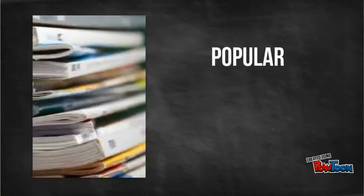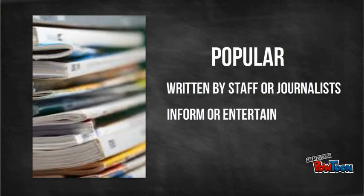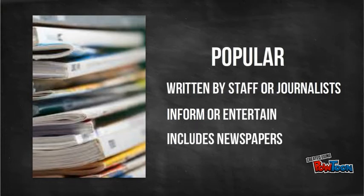Popular magazines are very different from scholarly journals or trade magazines. They are written by staff or journalists and do not go through a peer-review process. Their purpose is to inform or entertain, and they can typically be found on your grocery store shelves.